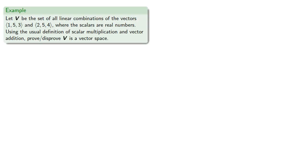For example, let V be the set of all linear combinations of the vectors (1, 5, 3) and (2, 5, 4), where the scalars are real numbers. Using the usual definition of scalar multiplication and vector addition, prove or disprove that V is a vector space.